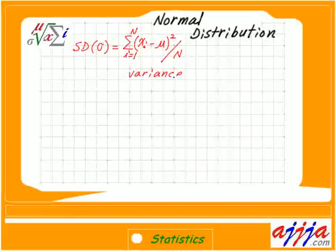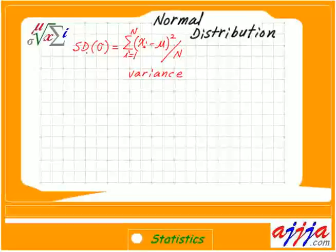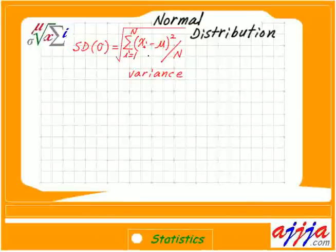So far, we have found the variance. Variance means the square of the standard deviation. That's why we have to put the square root sign — just like that. Then with the square root sign, we finally get the standard deviation.